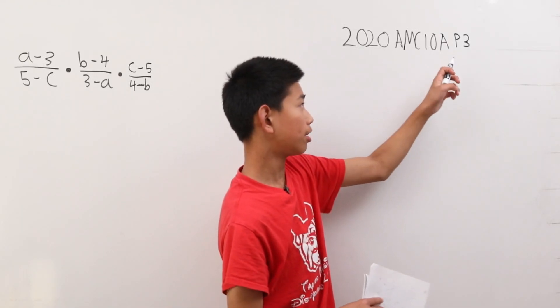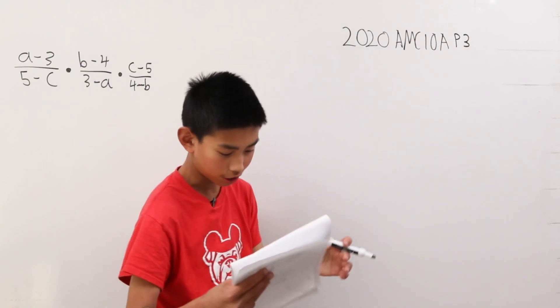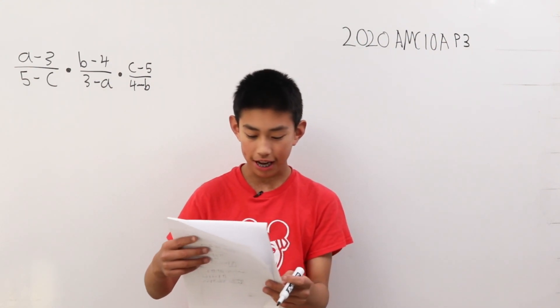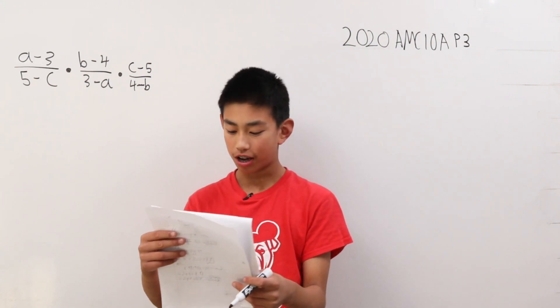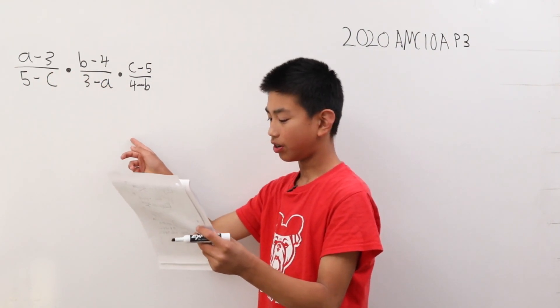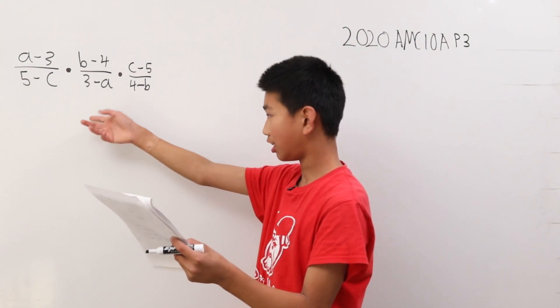Today, we're solving problem 3 from the AMC 10A from 2020. Assuming that a is not equal to 3, b is not equal to 4, and t is not equal to 5, what is the value in the simplest form of the following expression?